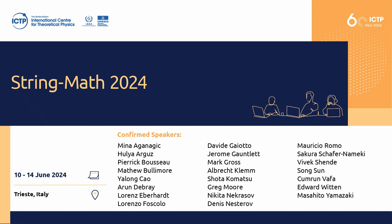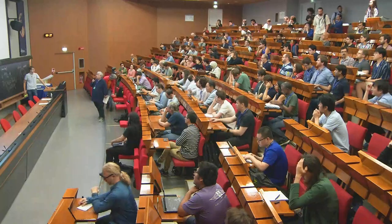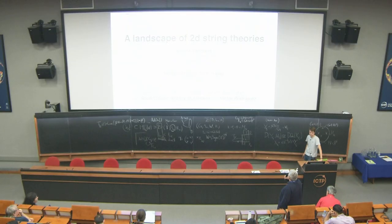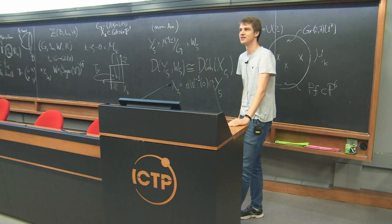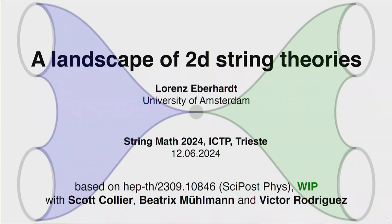The next speaker is Lorenz Eberhardt, who is going to talk about the landscape of 2D string theories. Thank you very much. Let me join the other speakers in thanking the organizers for this wonderful conference in a very wonderful place. Today I'll talk about work in collaboration with fantastic collaborators: Scott Collier, Beatrix Mühlmann, and Victor Rodriguez. We put out one paper last year, and the second part of the talk is a work in progress.